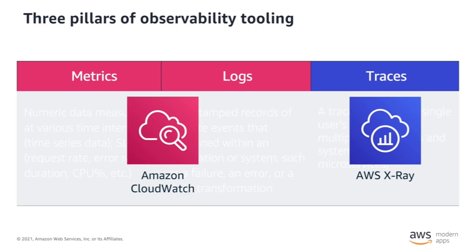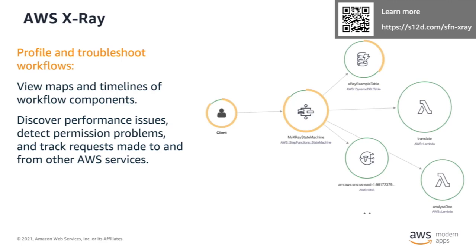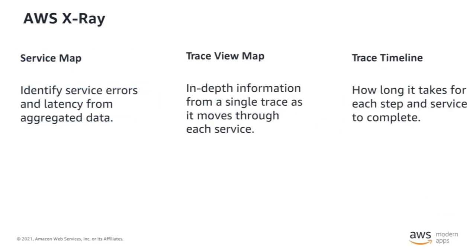The Step Functions integration with X-Ray was launched in September 2020 and provides an additional workflow monitoring experience that lets developers view maps and timelines of the underlying components that make up a Step Functions workflow. This helps to discover performance issues, detect permission problems, and track requests made to and from other AWS services. The Step Functions integration with X-Ray can be analyzed in three constructs: the Service Map, the Trace View, and the Trace Timeline.